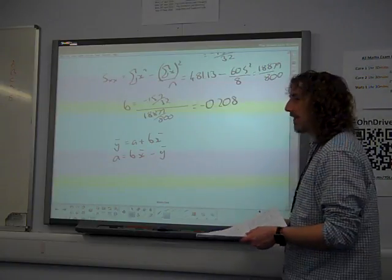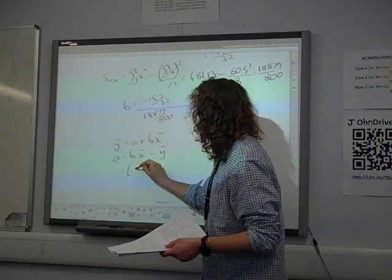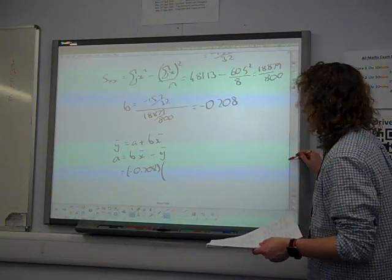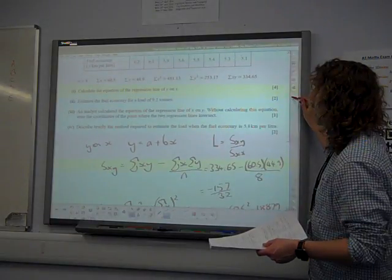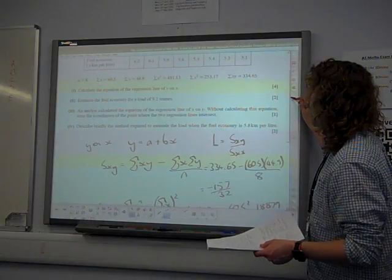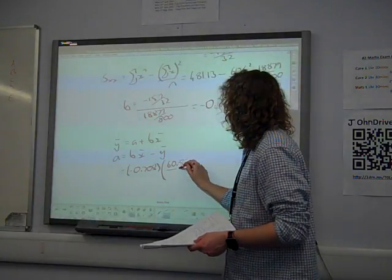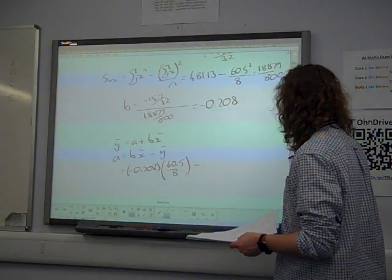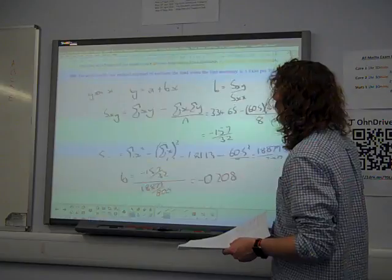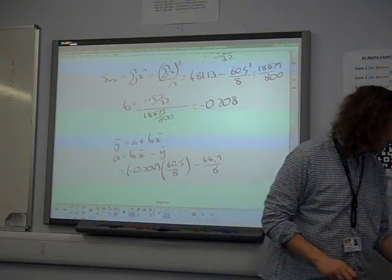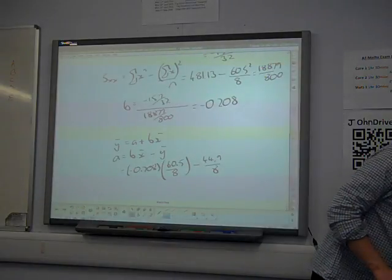And so then we stick the numbers in there. That is our minus 0.208 times x bar, which is 60.5 over 8, take away y bar, which is 44.9 over 8. We do that on our calculator.